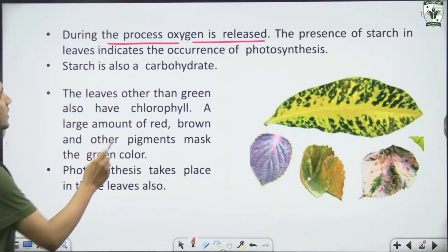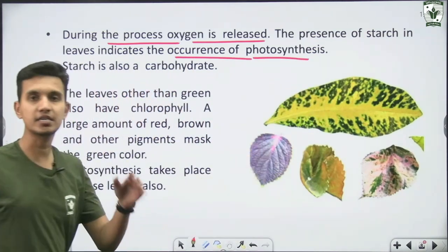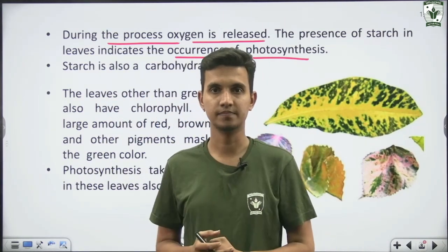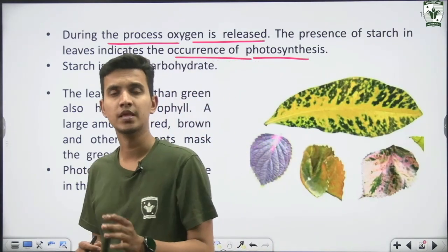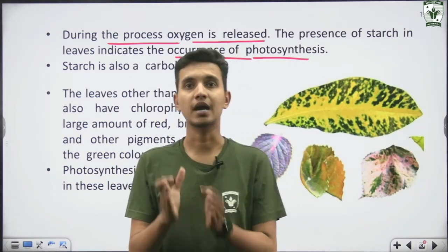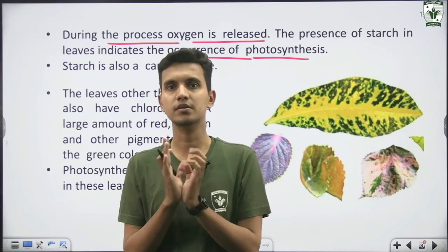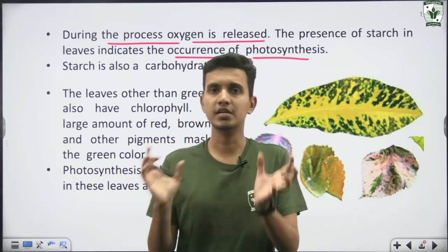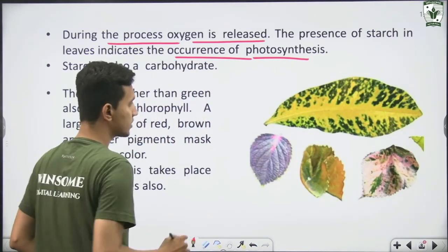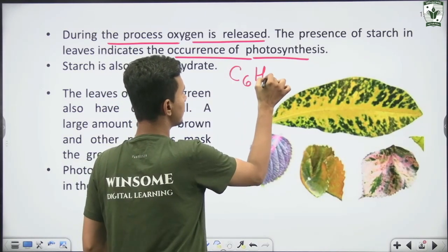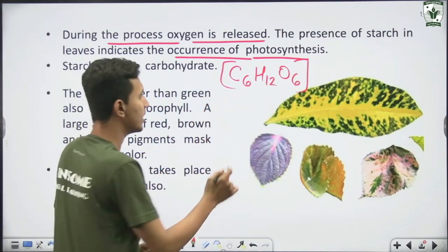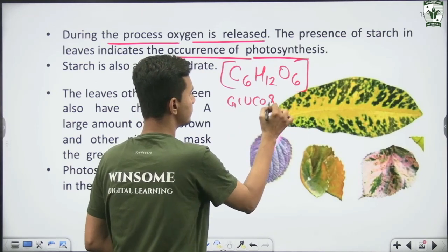The presence of starch in leaves indicates the occurrence of photosynthesis. Using carbon dioxide, water, sunlight, and chlorophyll, the plant produces glucose. The formula for glucose is C6H12O6, which is a carbohydrate made up of carbon, hydrogen, and oxygen.